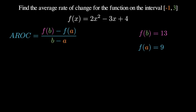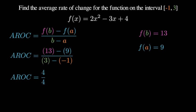Now I'm ready to plug into the AROC equation. I replace f of b with 13, f of a with nine, b with three, and a with negative one. I then go through the arithmetic to find that this simplifies into four over four, and four over four is simply one.